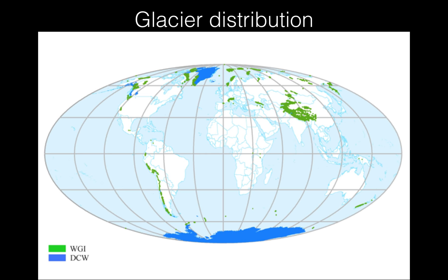This map shows the distribution of glaciated regions across the world. The green dots indicate highly glaciated regions — all along the west coast of South America, the Andean mountains, the Himalayan region and Central Asian glaciated regions, Alaska and surrounding areas, close to Greenland, and also in northern Europe. You can see glaciers scattered across all latitudes.